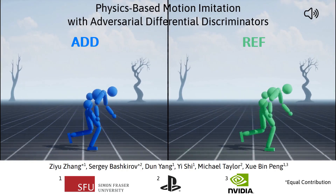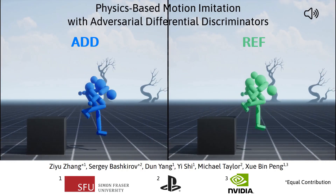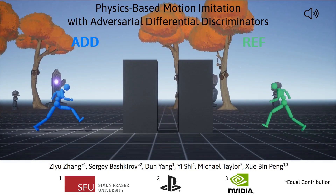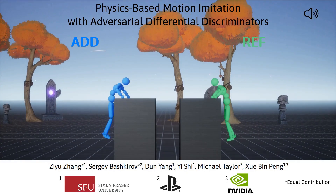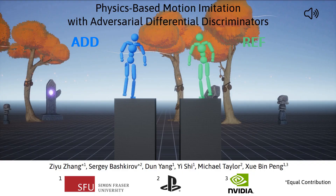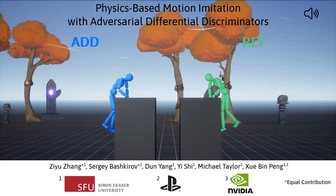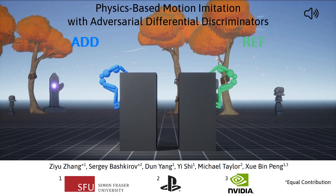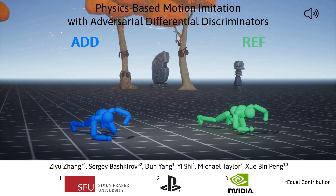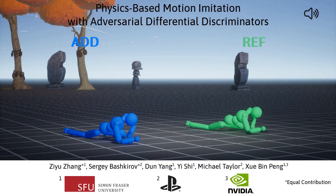We present an adversarial multi-objective optimization technique, applicable to a range of problems, including motion imitation for physics-based character animation. Our technique enables tracking controllers to closely replicate a diverse repertoire of behaviors, achieving comparable quality to state-of-the-art motion tracking methods, without manual reward engineering.